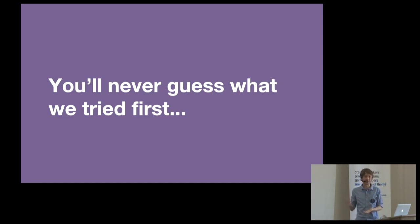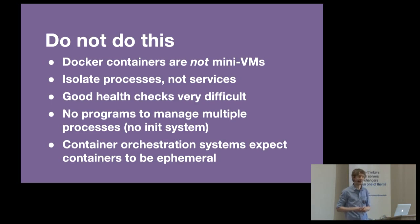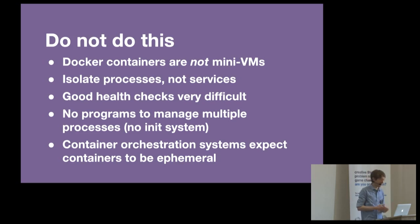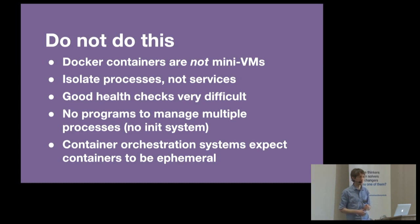You'll never guess what we tried first when we put Django in a container - we took most of that and basically just put it in a container. Please do not do this. This is really abusing Docker containers - they're not meant to be used like mini VMs. They're meant to isolate processes, not entire services. It makes good health checks very difficult. Docker containers don't have programs to manage multiple processes because there's no init system. Also, container orchestration systems basically expect containers to be ephemeral and fail fast - if something goes wrong, your container just stops and the orchestration system starts it somewhere else.